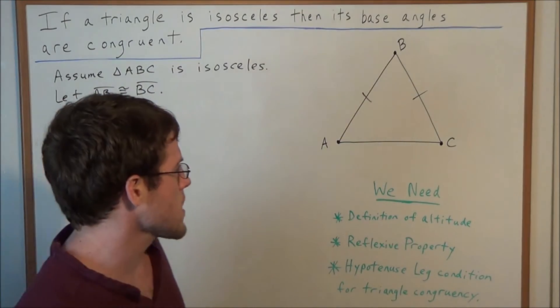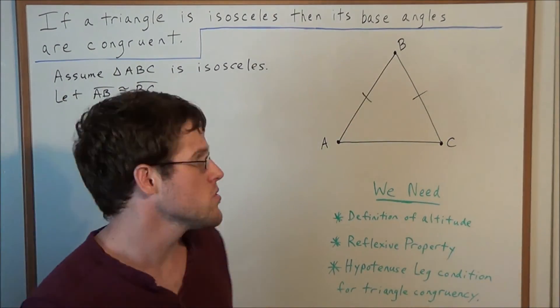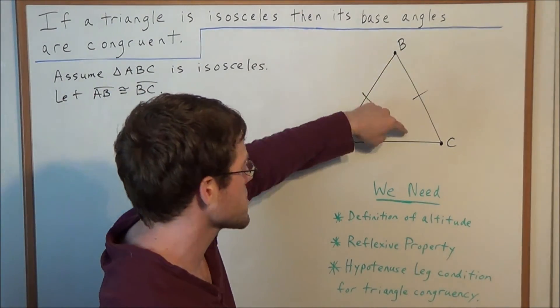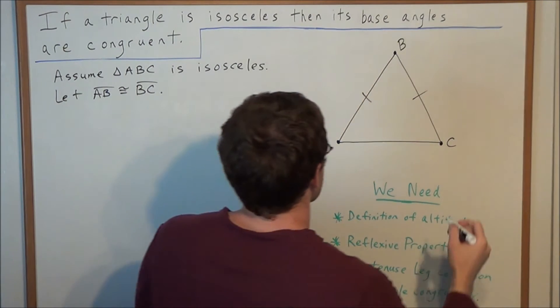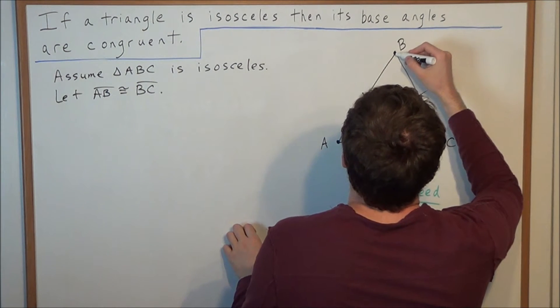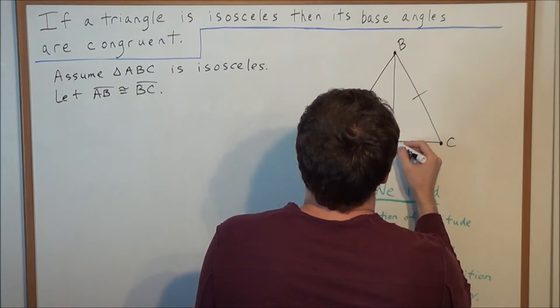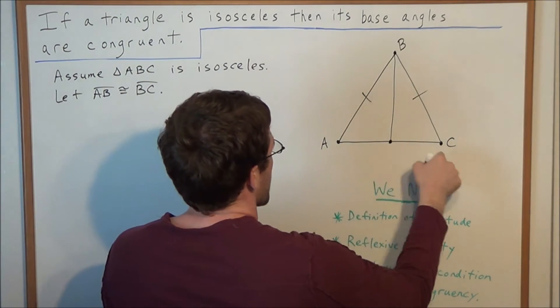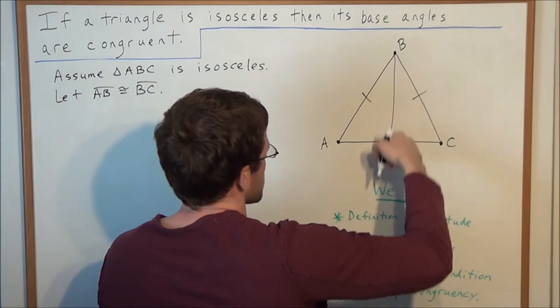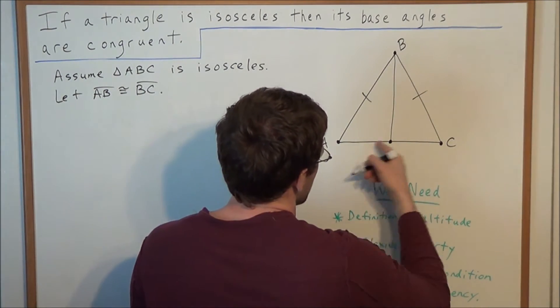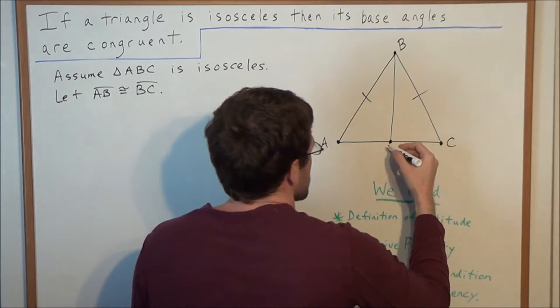So, now the next step is going to be to construct an altitude from vertex B to side AC. And now remember, by definition, an altitude goes through one of the vertices of a triangle and is perpendicular to the side opposite that vertex. So, let's say that this altitude intersects the side AC at point E.